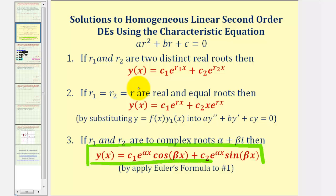As we've seen in previous examples, if we had two distinct real roots, this would be the form of the general solution. And if we had two real equal roots, the general solution would be in this form here.